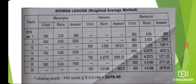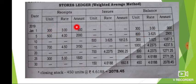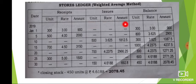Stores Ledger — Weighted Average Method. The columns are: Date, Receipt, Issue, Balance. Under Receipt: Unit, Rate, Amount. Under Issue: Unit, Rate, Amount. Under Balance: Unit, Rate, Amount.